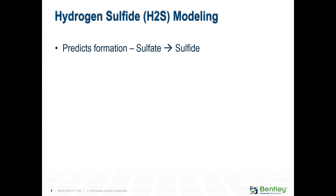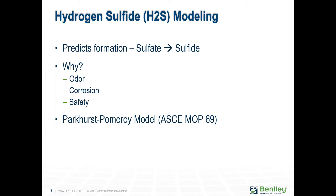Hydrogen sulfide forms in wastewater collection systems when an anoxic condition exists, and results in corrosion, odor, and toxic problems. The rate of formation depends primarily on the strength of the wastewater as characterized by the BOD concentration — the biochemical oxygen demand — and rate constants for the reaction, which are dependent on temperature. Hydrogen sulfide is most commonly a problem in systems with long detention times in warm weather. The calculations are based on the Pomeroy-Parker-Cross equation for predicting the H2S concentration in a sewer network.